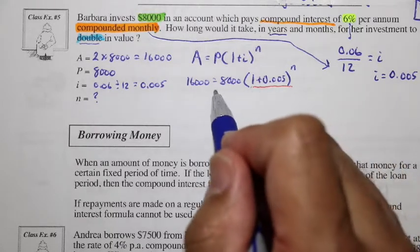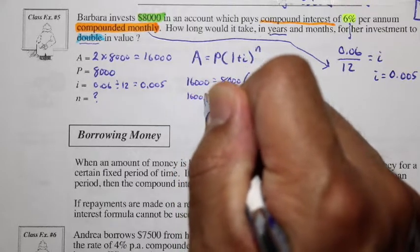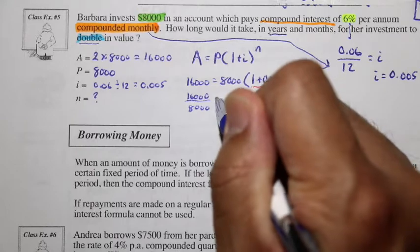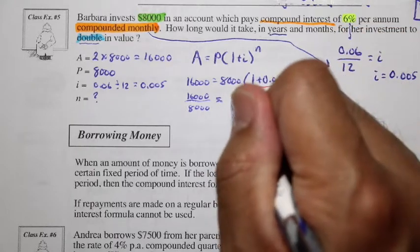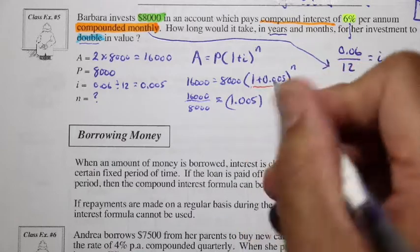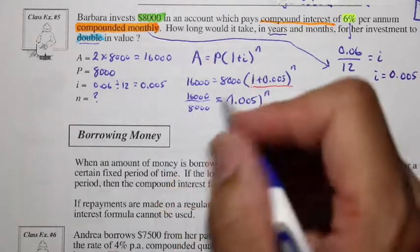We have 16,000 divided by 8,000. So I'm going to write that so that you can see it. Here's the ratio. This is equal to 1.005, combining the 1 and the 0.005, to the n. And 16,000 divided by 8,000, that's 2.